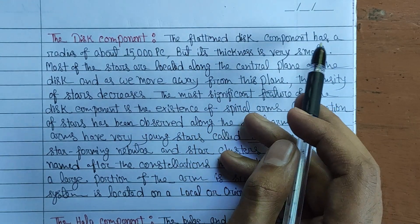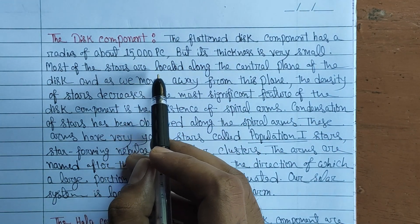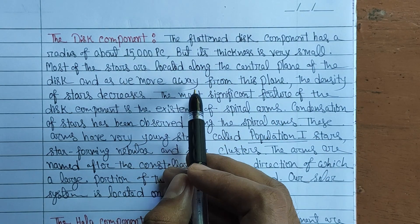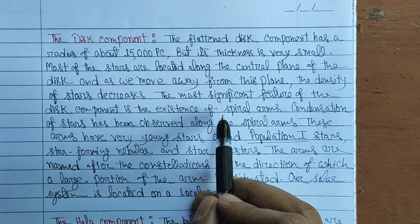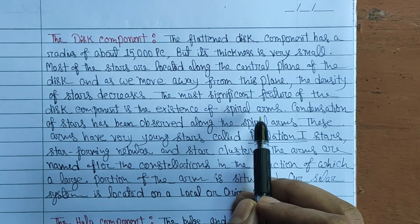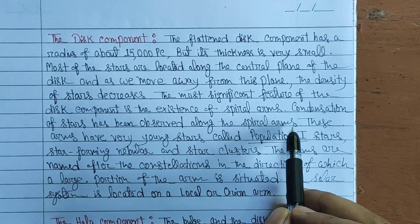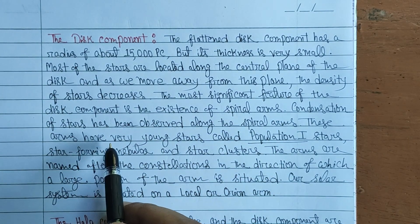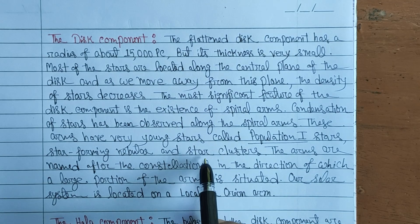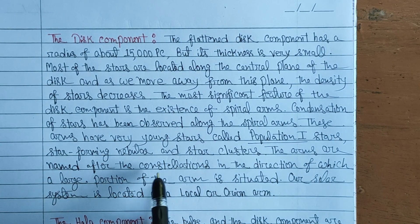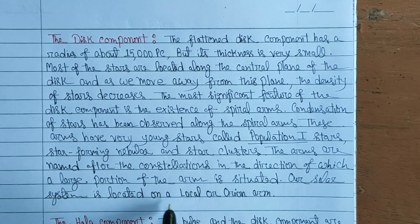The flattened disk component has a radius of around 15,000 parsecs but its thickness is very small. Most of the stars are located along the central plane of the disk, and as you move away from this plane the density of stars decreases. The most significant feature of the disk component is the existence of spiral arms. Condensation of stars has been observed along the spiral arms, which contain very young stars known as population one stars, star-forming nebulae, and other star clusters. The arms are named after the constellations in the direction of which a large portion of the arm is situated. Our solar system is located on the local Orion arm.